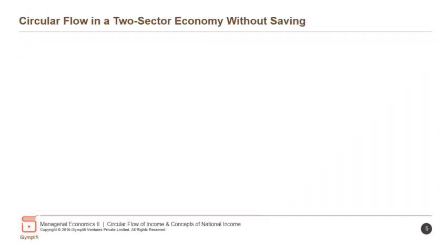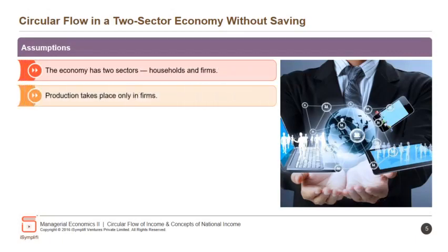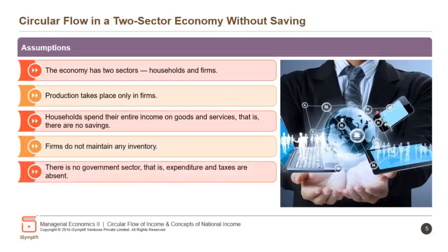Next is the circular flow in a two-sector economy without savings. The assumptions are: the economy has two sectors — households and firms; production takes place only in firms; households spend their entire income on goods and services, i.e., there are no savings; firms do not maintain any inventory; there is no government sector, i.e., expenditure and taxes are absent; and the foreign sector is absent.